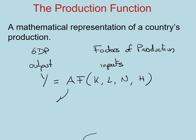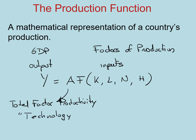There is a new addition: A. This A we call total factor productivity. As its name suggests, it's going to affect our production function F and all of its inputs alike. We colloquially refer to it as technology, but it is a lot more than that. So, this production function takes capital, labor, natural resources, and human capital, combines them together, then multiplies by total factor productivity to get output, or GDP.